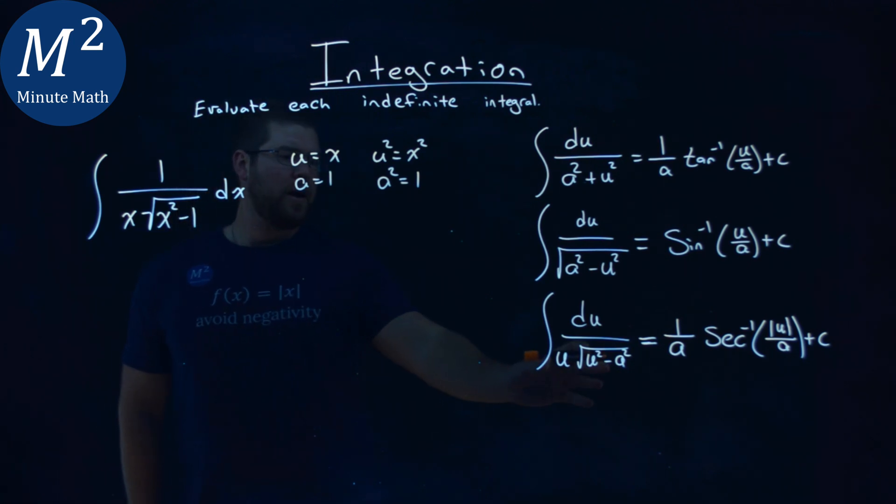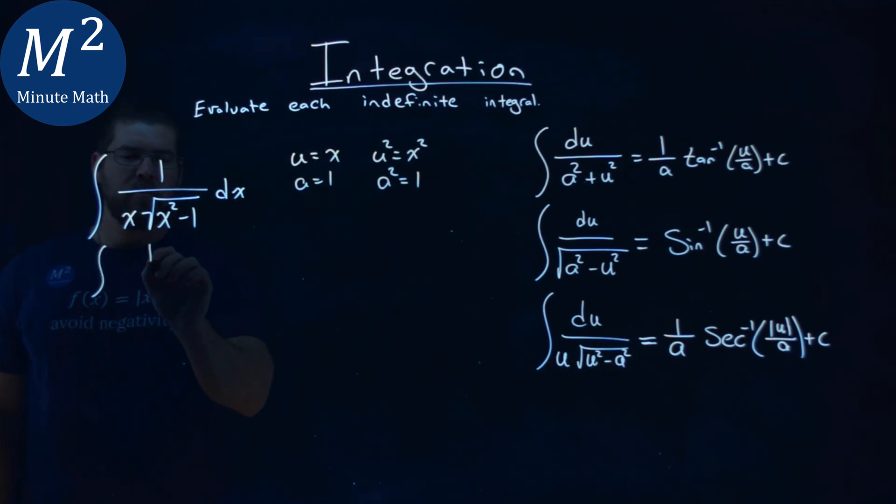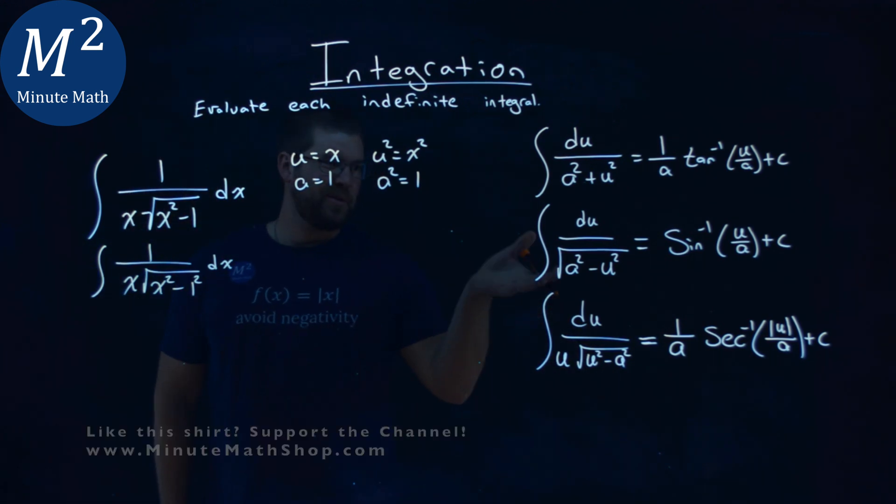So let's go rewrite it and kind of showing the squared values there. And I'm really just putting a 1 squared here. You'll see. So we have 1 over x square root, x squared minus 1 squared dx. Now it's kind of broken up to look like this form.